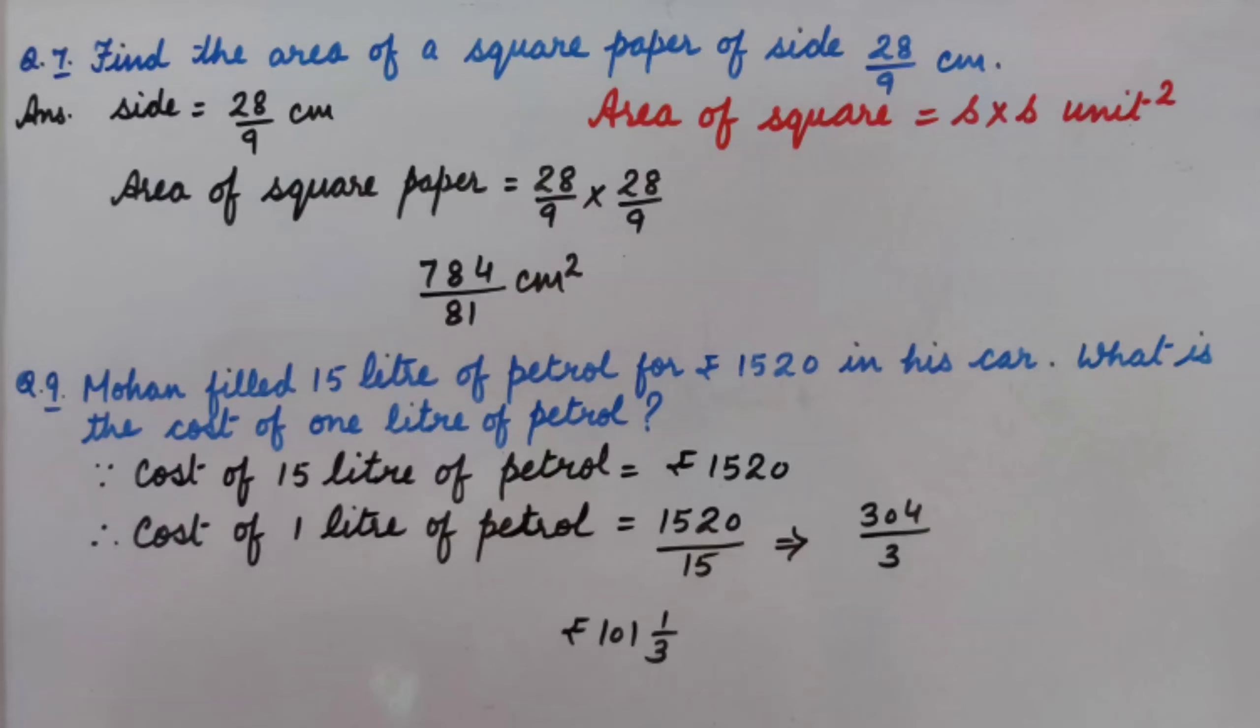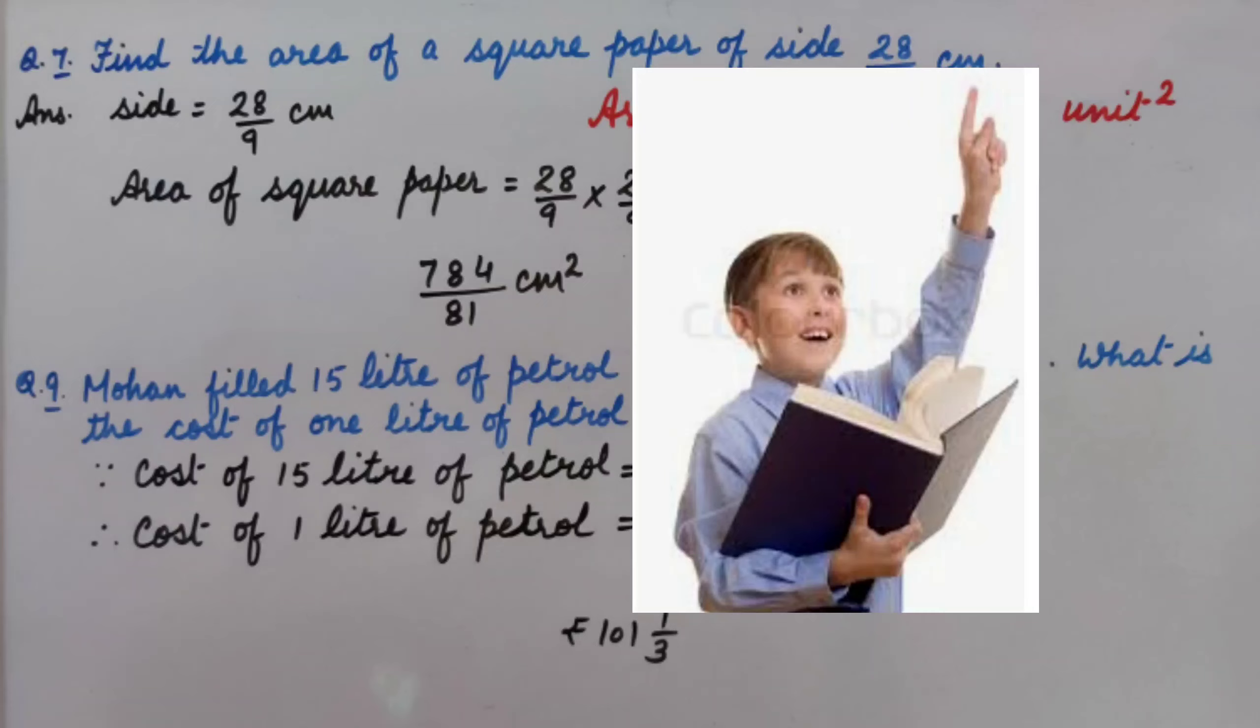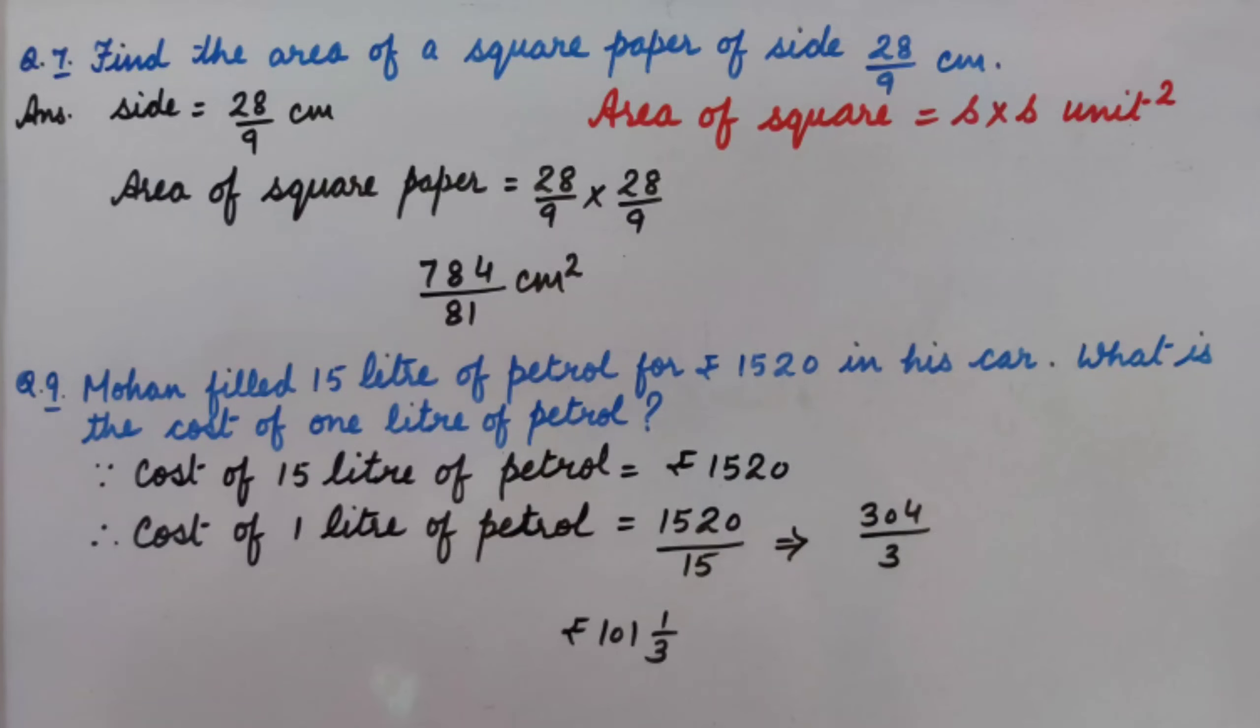Because area of square is asked, so we will write its formula. Area of square equal to side into side unit square.